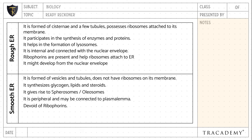Rough endoplasmic reticulum might develop from the nuclear envelope. Whereas smooth endoplasmic reticulum develops from the rough endoplasmic reticulum.